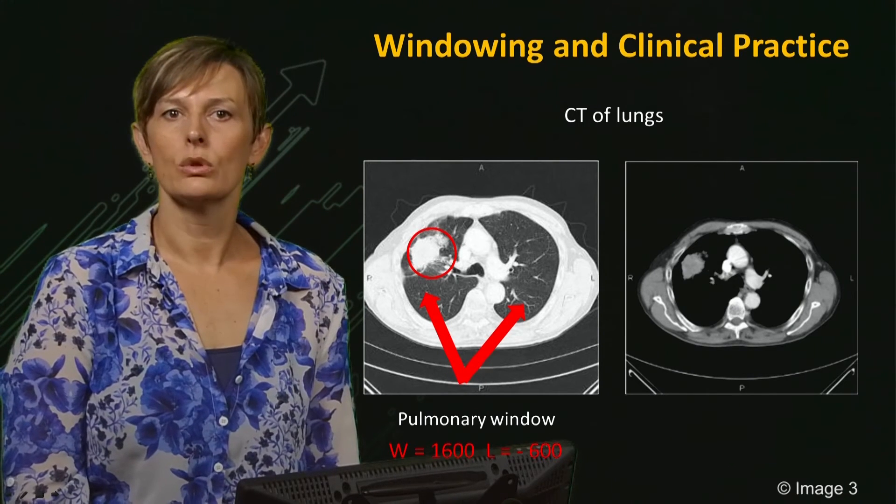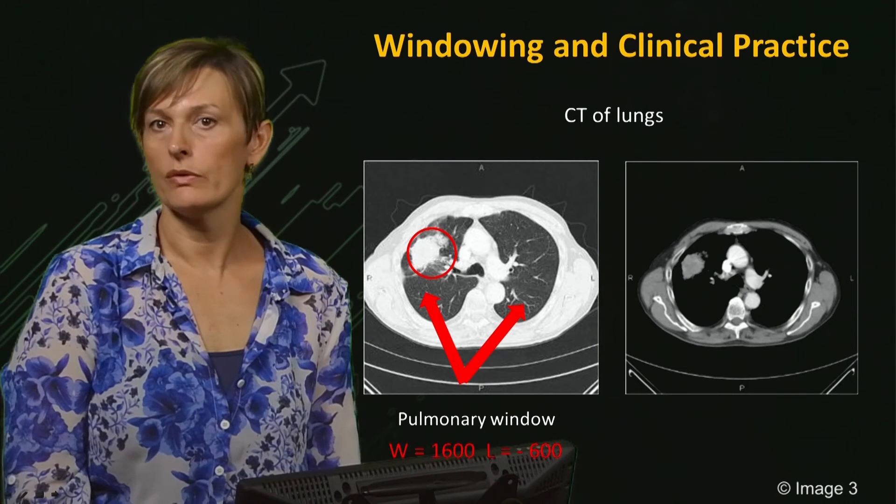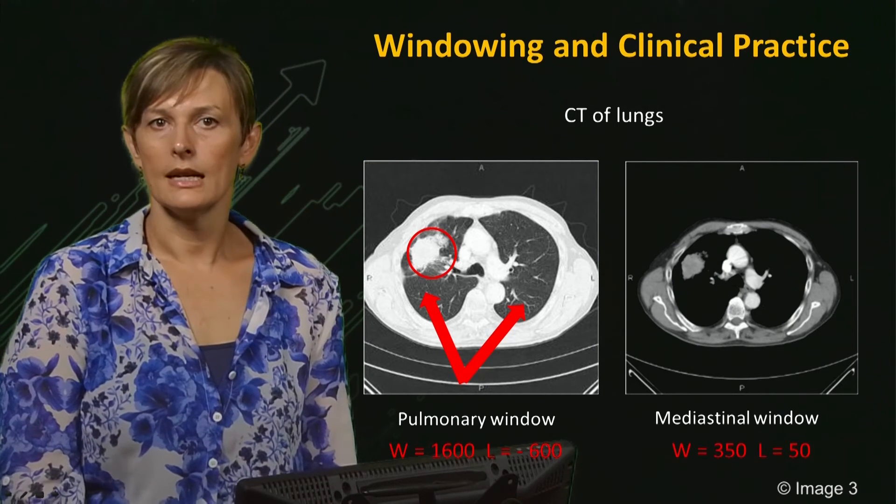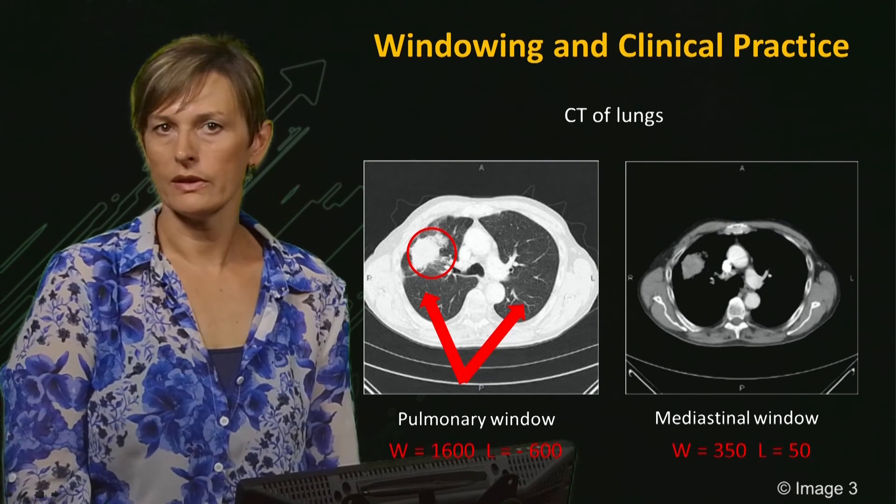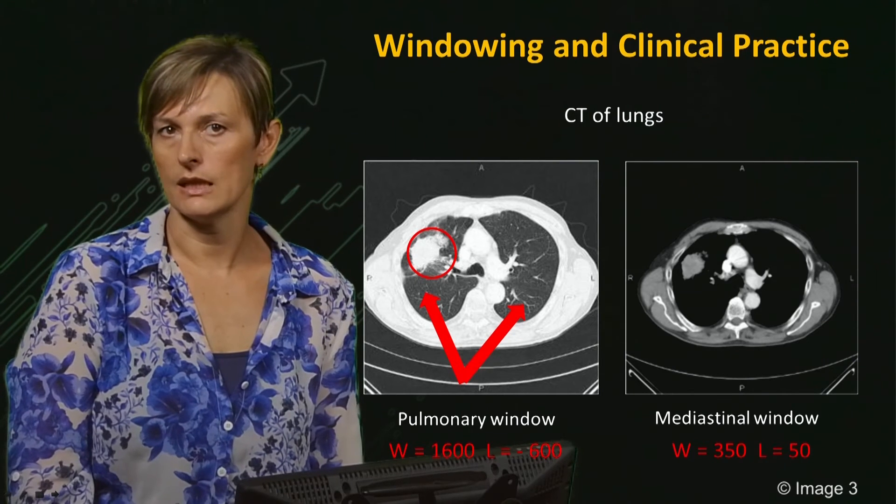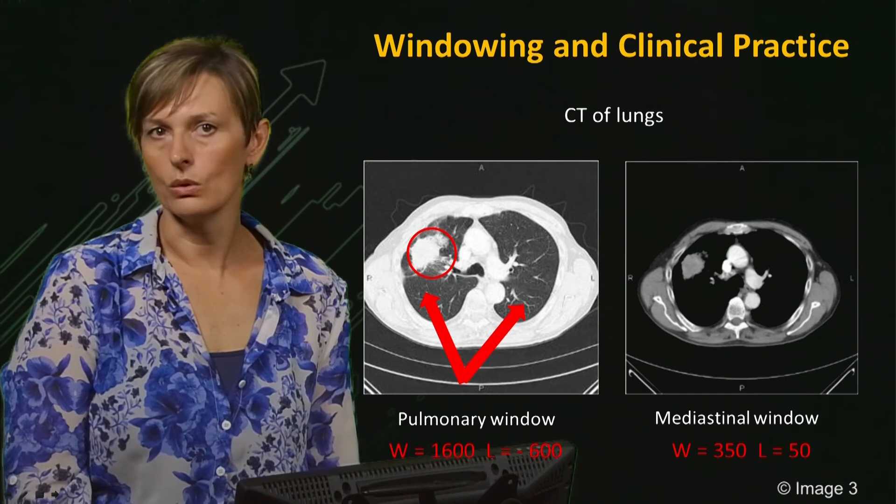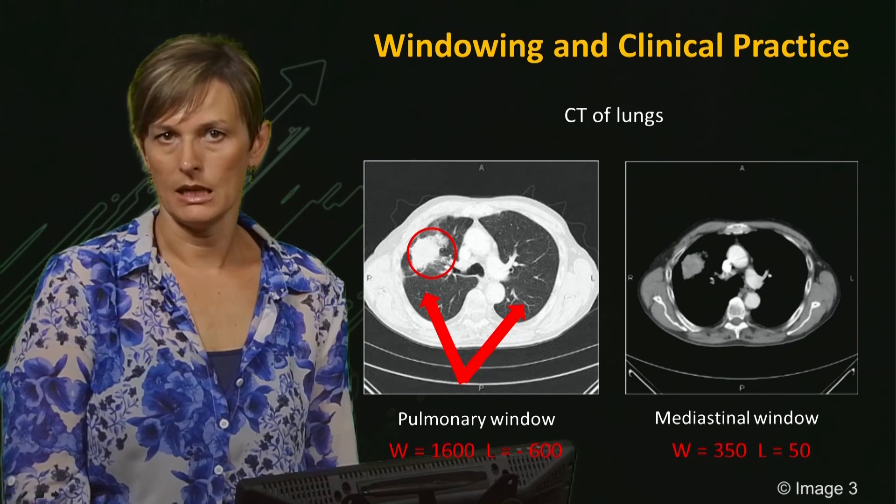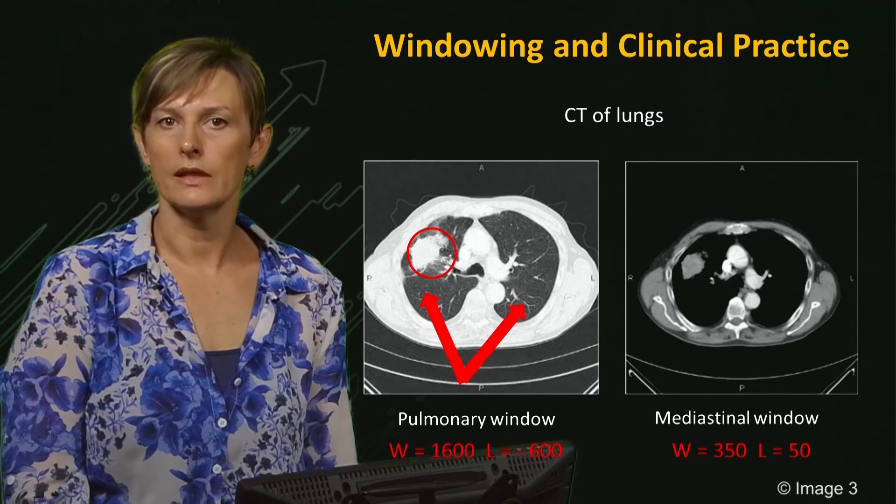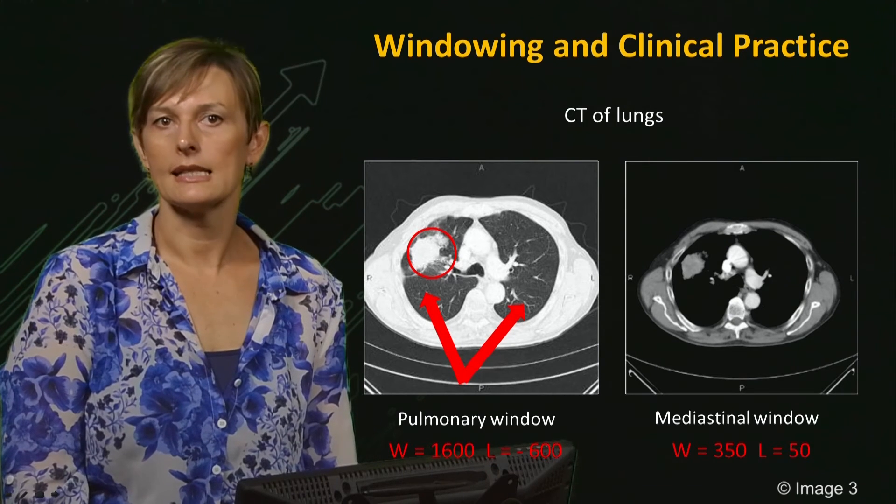Now, let's have a look at the same image but taken with a different window. W here was set to 350 and L was set to 50. As you can see, just by changing the window values, the lung has disappeared. But now, in this new window, we can clearly see a tumor.